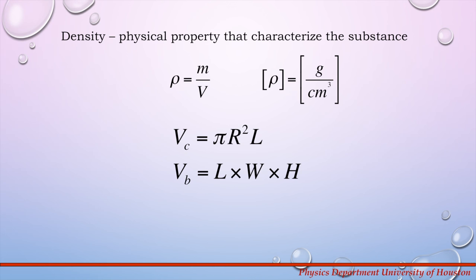Density is a physical property that characterizes a substance. The equation we use to calculate density is rho equals m divided by V. This equation tells us how much mass we have per unit volume of a certain substance. The units for density are kilograms per meter cubed.